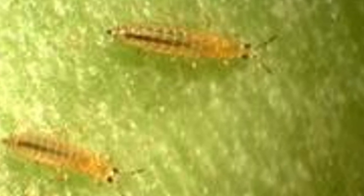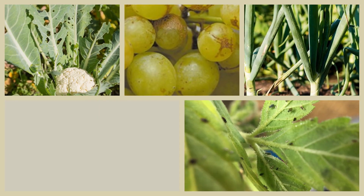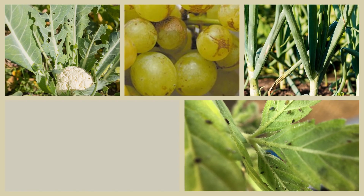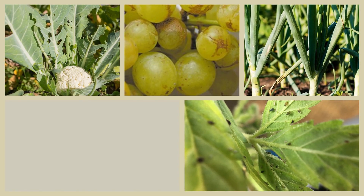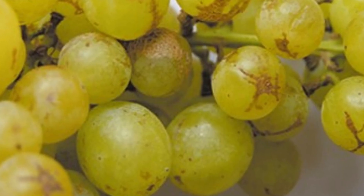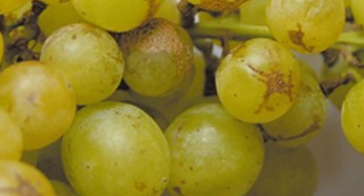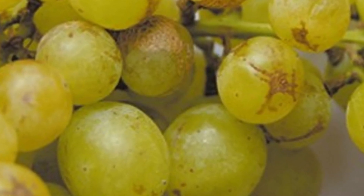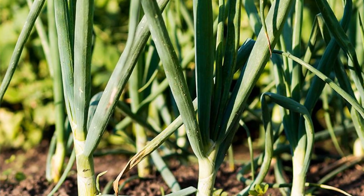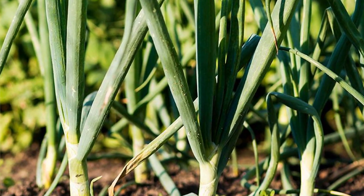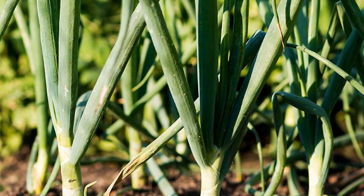Thrips infest various crops, including vegetables, fruits, and ornamental plants. Thrips cause damage to crops in several ways. First, they feed on the surface of plant leaves, causing a stippling or flecking pattern, which can reduce photosynthesis and weaken the plant. They can also cause distortions in plant growth and development and damage to fruits and flowers.